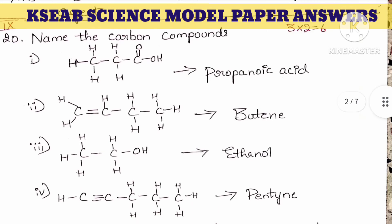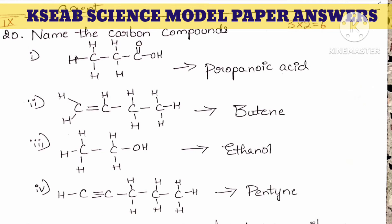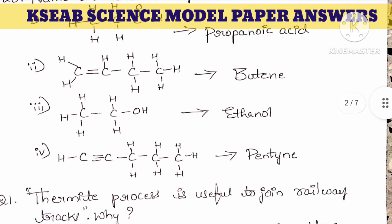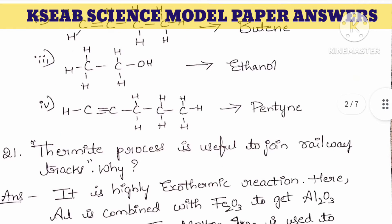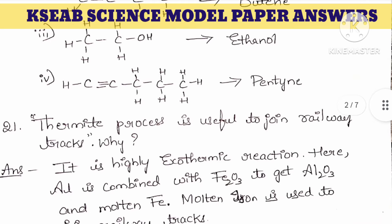Now moving to 2-mark questions. Name the carbon compounds: the first is 3 carbons with oic acid — that is propanoic acid. Second, 4 carbons with double bond — that is butene. Third, 2 carbons with alcohol — that is ethanol. Fourth, 5 carbons with triple bond — that is pentyne.